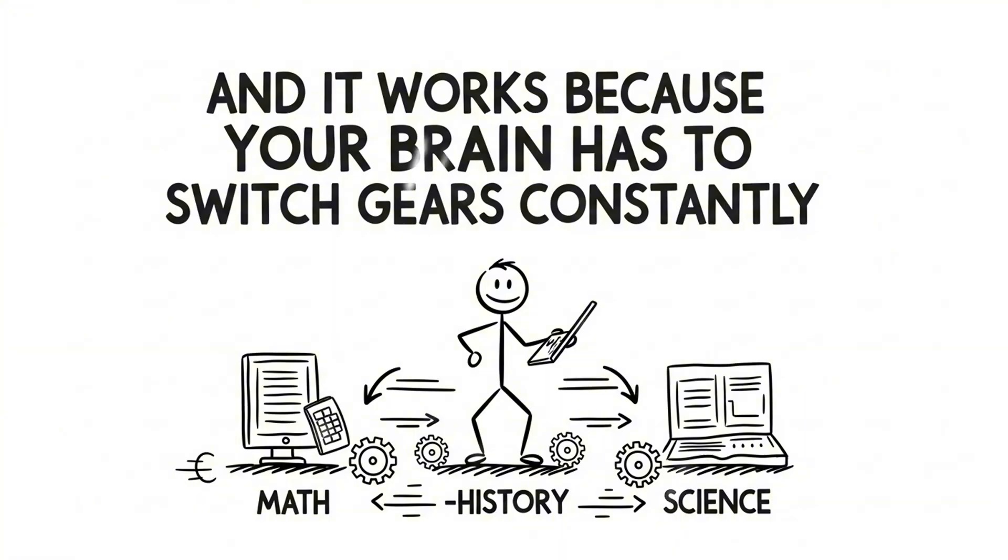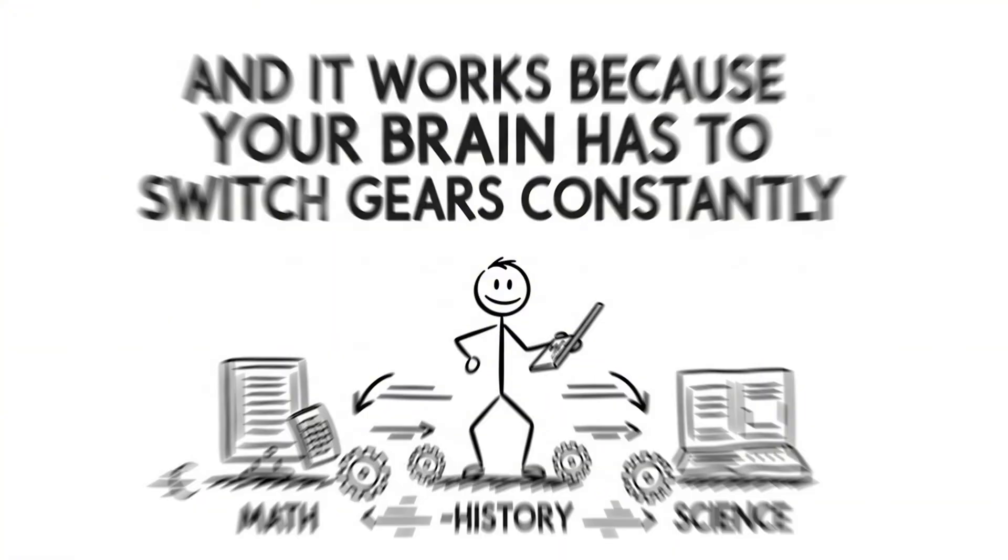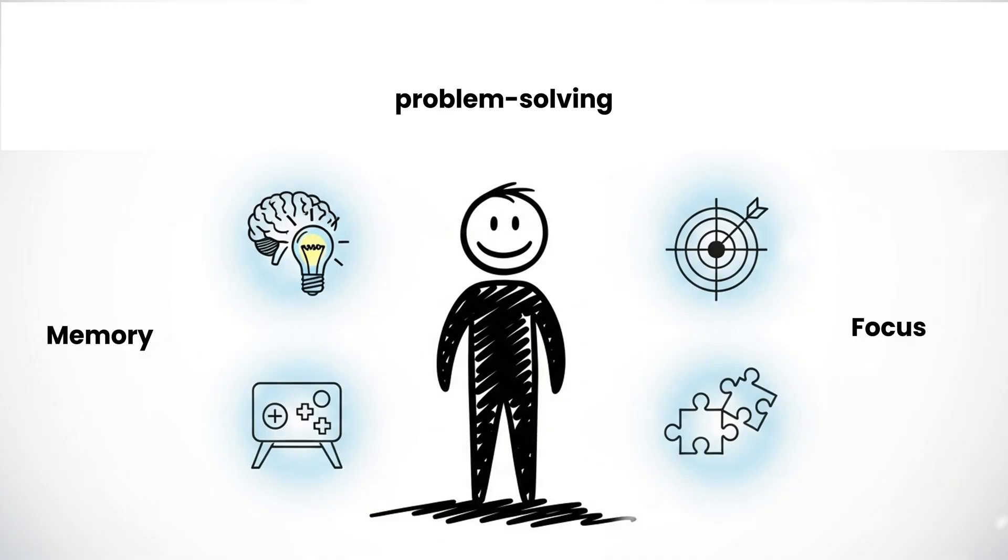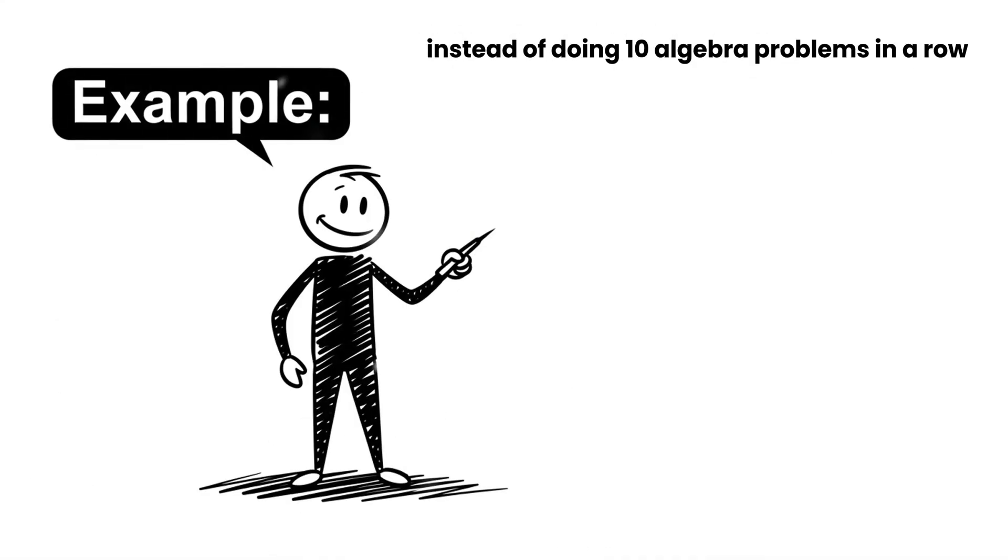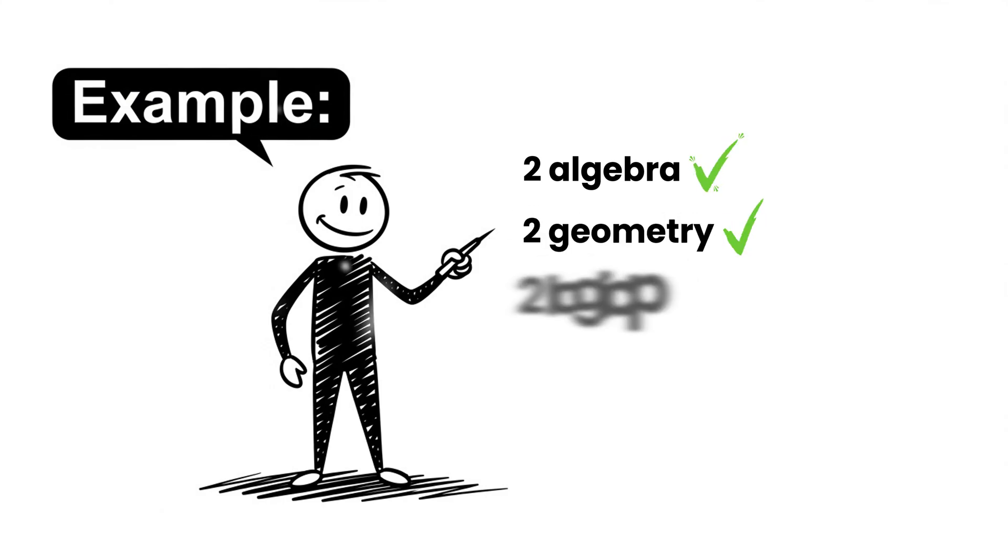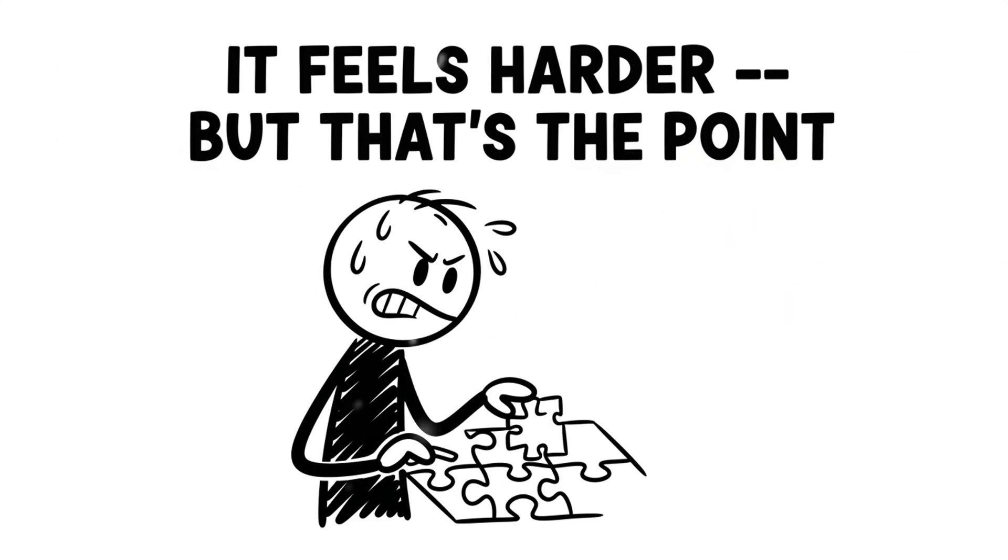And it works because your brain has to switch gears constantly. This strengthens memory, focus, and problem solving. Instead of doing ten algebra problems in a row, do two algebra, two geometry, two logic puzzles, and repeat. It feels harder, but that's the point. Your brain has to actively think, not just repeat a pattern.